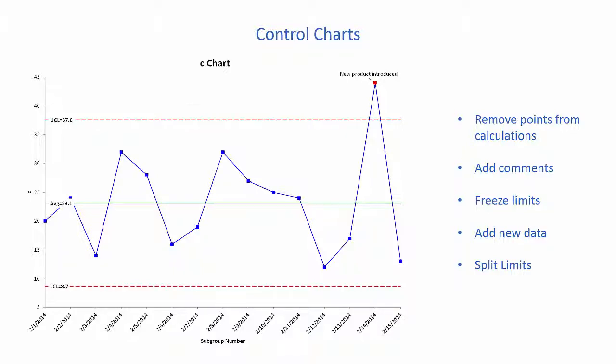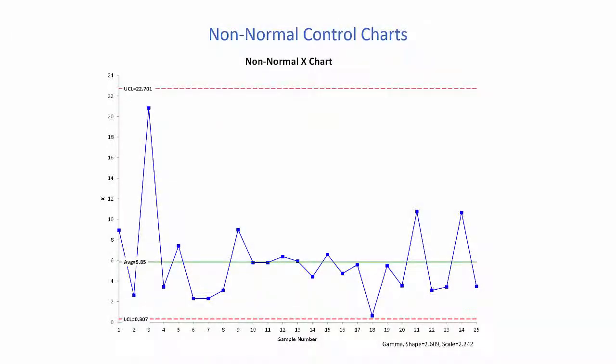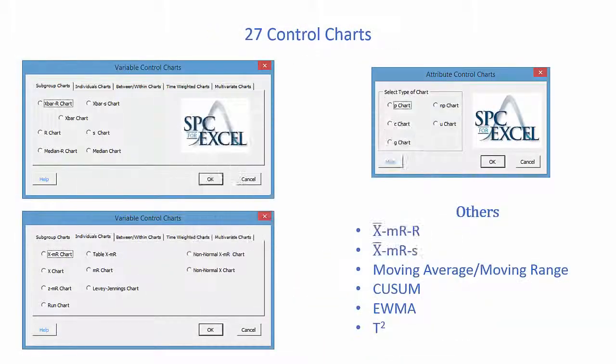Control charts are a mainstay. Red points are out of control. It's easy to split the limits or freeze the limits. And we've added non-normal control charts fit to a number of different distributions.